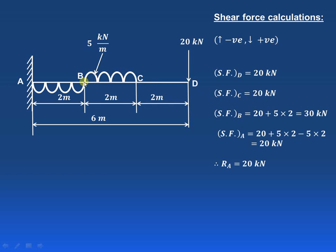Between C and B, there is a downward acting uniformly distributed load of 5 kN per meter. The meaning of 5 kN per meter is that for 1 meter length the load is 5 kN, and for 2 meter length the load will be 5 into 2, acting in the downward direction. So we use the plus sign: 20 plus 5 into 2, giving a total of 30 kN.